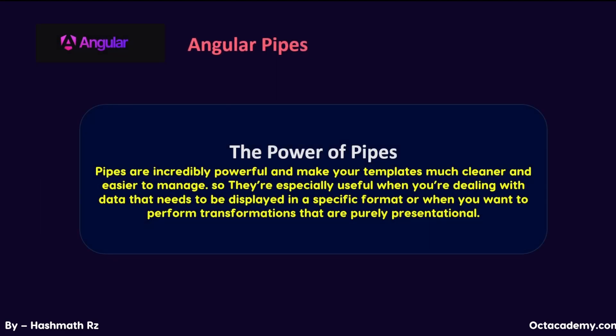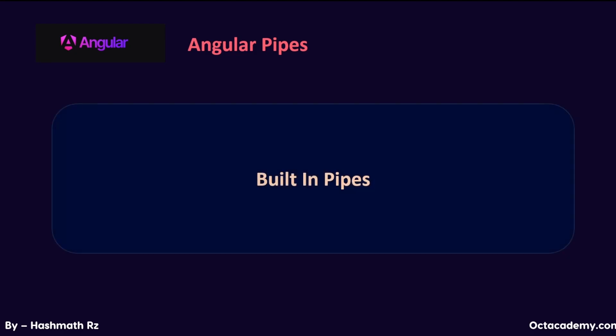As you can see, pipes are incredibly powerful and make your templates much cleaner and easier to manage. They are especially useful when dealing with data that needs to be displayed in a specific format, or when you want to perform transformations that are purely presentational. Now that you have a good understanding of what pipes are and why they're useful, next we'll dive into the different types of pipes Angular offers out of the box, starting with the most commonly used built-in pipes, then exploring how to create custom pipes. See you in the next lesson.